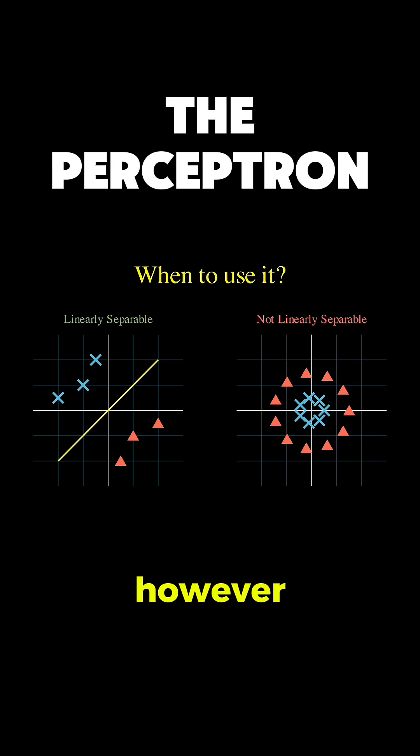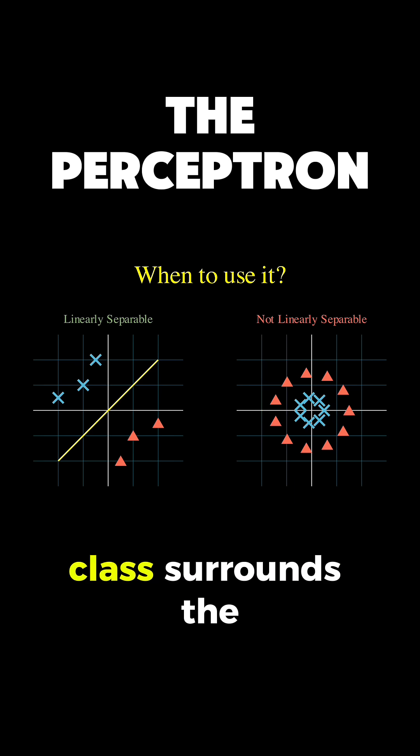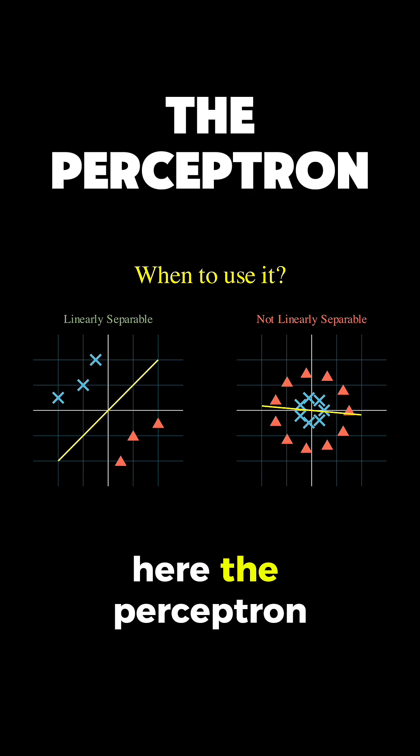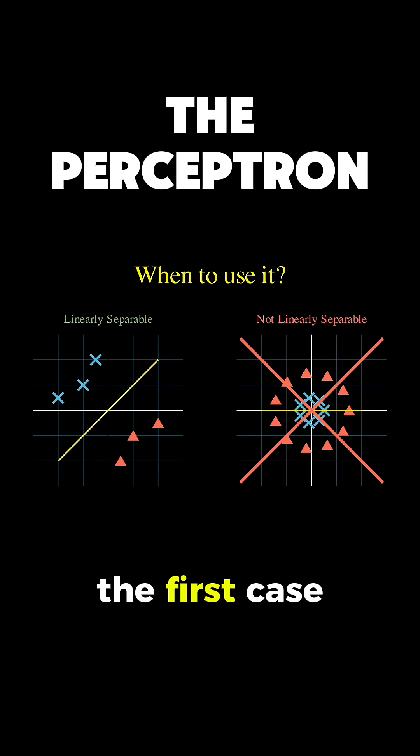On the right, however, we have a case where one class surrounds the other. No single straight line can separate them here. The perceptron is designed for the first case, though we'll see a trick for the second case later.